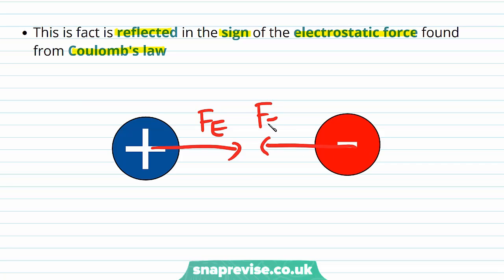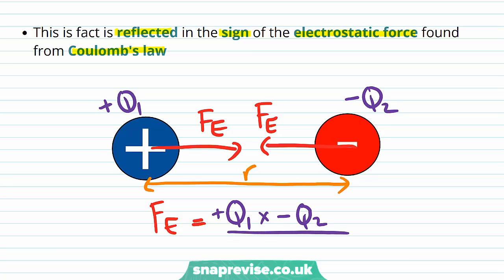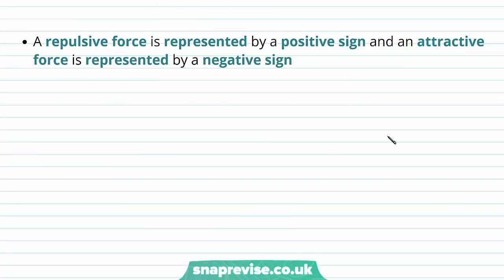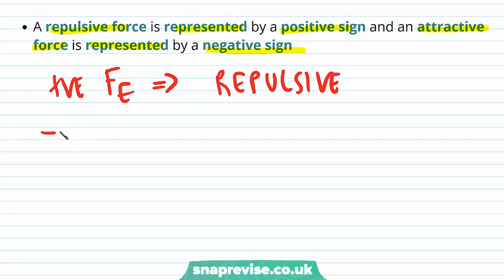These two charges experience an electrostatic force Fe given by Coulomb's law. If we define the charges as q1 and q2 with separation r, the positive charge has plus q1 and the negative charge has minus q2. So we have plus q1 times minus q2, divided by 4π times epsilon 0 times r squared. A repulsive force is represented by a positive sign, and an attractive force is represented by a negative sign. So a positive electrostatic force means repulsion, and a negative electrostatic force means attraction.